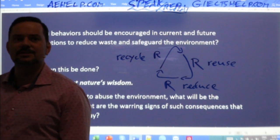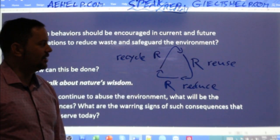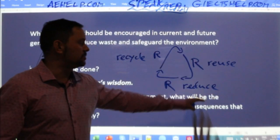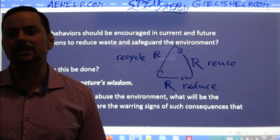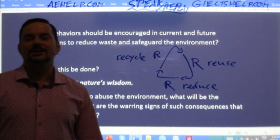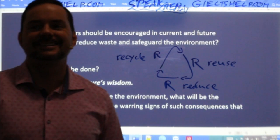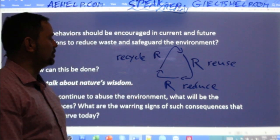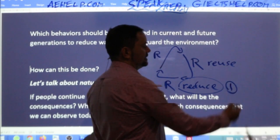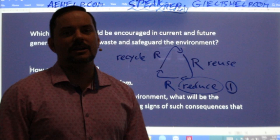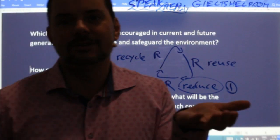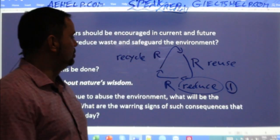Which of the three R's is most important? The answer, according to scientists, is actually reduce — just use less. Among the three, reduce is number one: if you're using a handful of soap, try to use half as much; if you're using five pieces of toilet paper, try to use just two. Then second is reuse, and third is recycle. That is the order of importance.